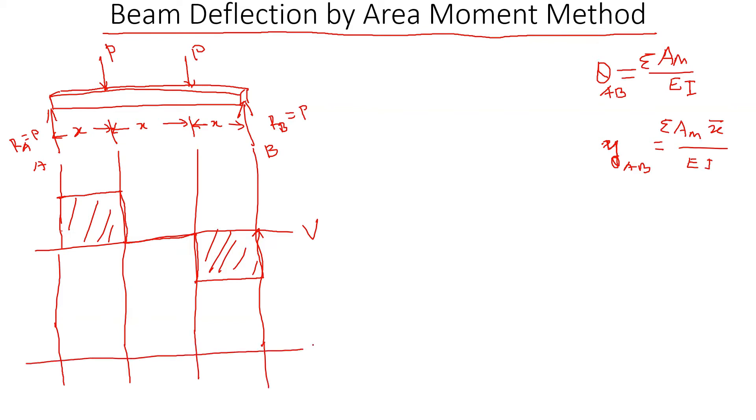If we calculate the moment diagram, it's going to look like this. The moment at this point will be P times X. This is the moment diagram.